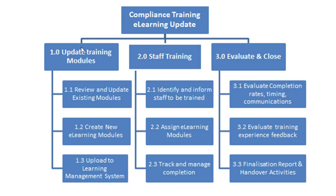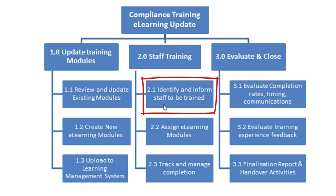You'll also notice there is some coding. We have deliverable 1.0 with 1.1, 1.2, 1.3, then 2.0, 2.1, 2.2, 2.3, and so forth. This makes it easier to communicate and for the project team to be on the same page. So in a project meeting I might say we're talking about work package 2.1, which is 'identify and inform staff to be trained,' and everyone will know exactly which chunk of work we're discussing.